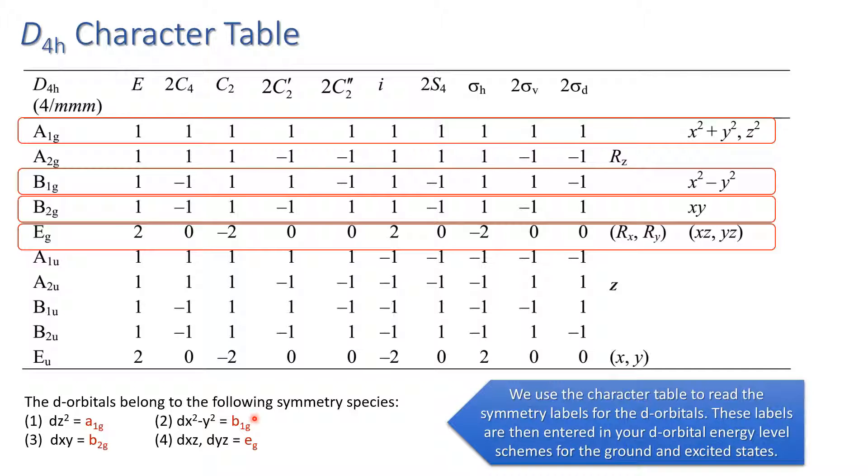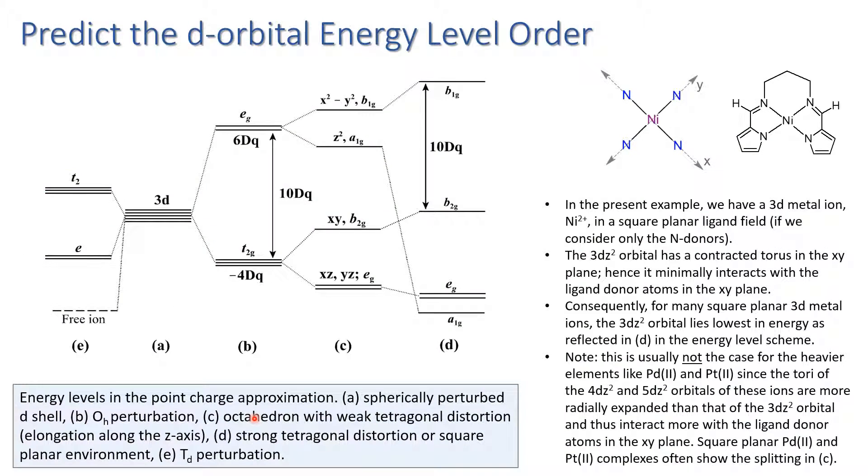The next step is to put the d orbitals into an energy order consistent with the geometry of the metal ion. We're going to turn back to chapter 2 in the book and refresh our memories on this particular crystal field or ligand field splitting diagram. In the gas phase, a 3d metal ion will have five degenerate d orbitals. Place that metal ion into an octahedral field and we split up into the two sets t2g and eg. If you have a tetragonal ligand field, dz² is lower in energy than dx²-y² if the axial ligand field is weaker than the equatorial ligand field. This causes splitting in the lower set of orbitals so that dxz and dyz are lower in energy than dxy.